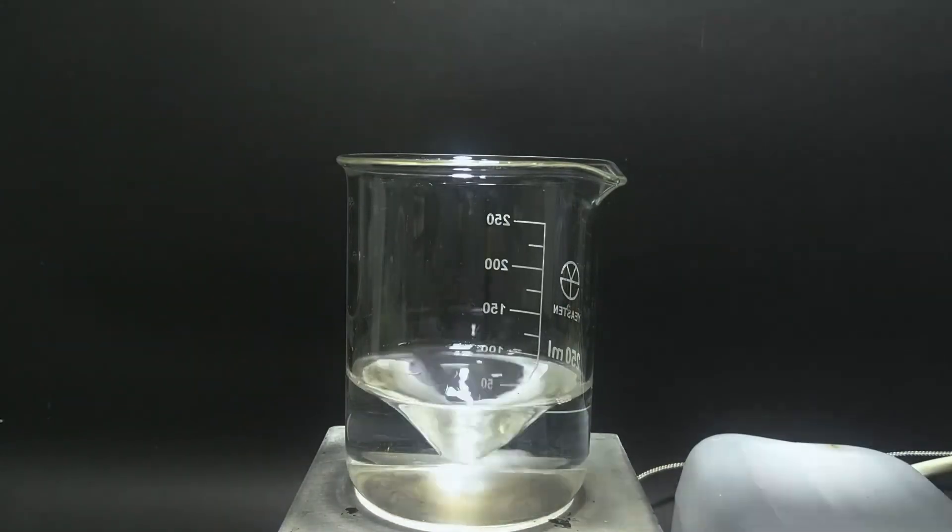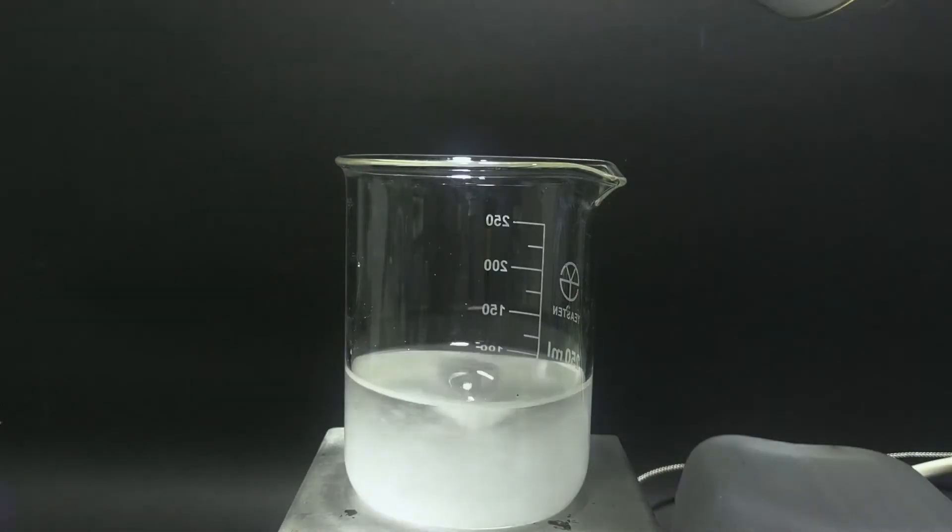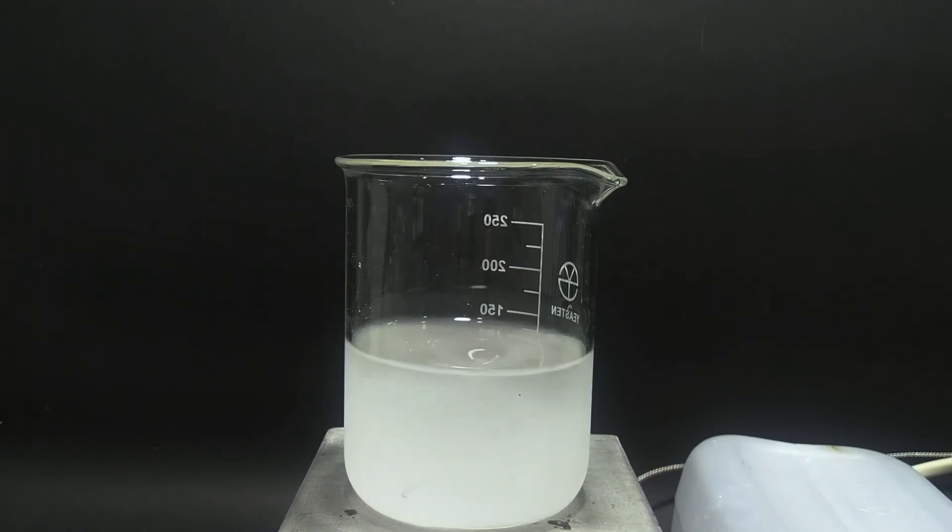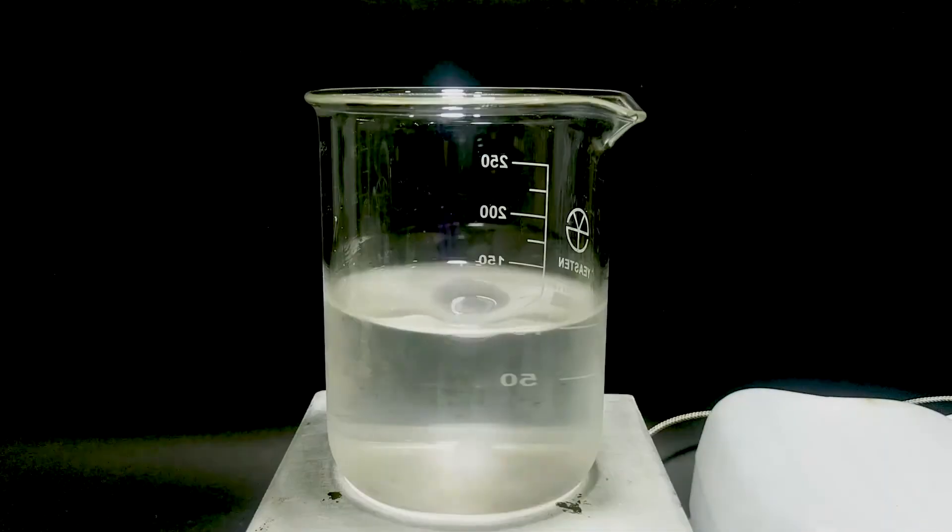First, I add 70 grams of citric acid into a beaker. Then pour the distilled water and turn on the hot plate until the solution becomes clear.